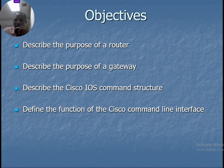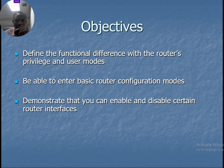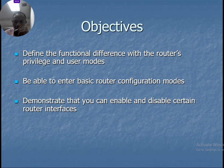The fourth objective is to define the functions of the Cisco Command Line Interface — how this will be configured. The next objective is to define the functional difference between the router's privileged mode and the user exec mode.